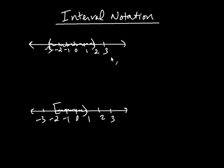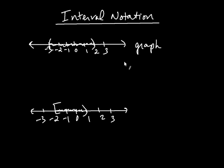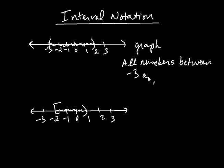In this video, we're going to discuss what's called interval notation. Here we have a number line, and I have a parenthesis on negative 3 and a parenthesis on positive 2. Notice that between negative 3 and positive 2, I have shading. This is what we call a graph of a set, and it's denoting basically all the numbers between negative 3 and positive 2. There's a more convenient way of denoting all those numbers.